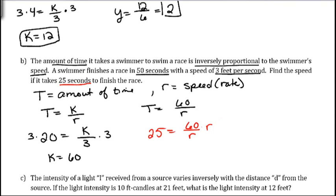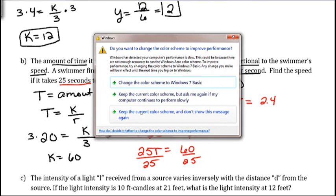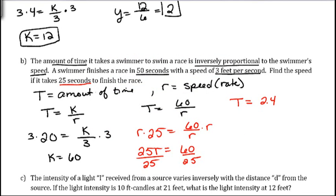And so we need to get the r out of the denominator. We'll do that by multiplying both sides by r. So we get 25r equals 60 and then divide both sides by 25. And so 60 divided by 25 gives us 2.4.